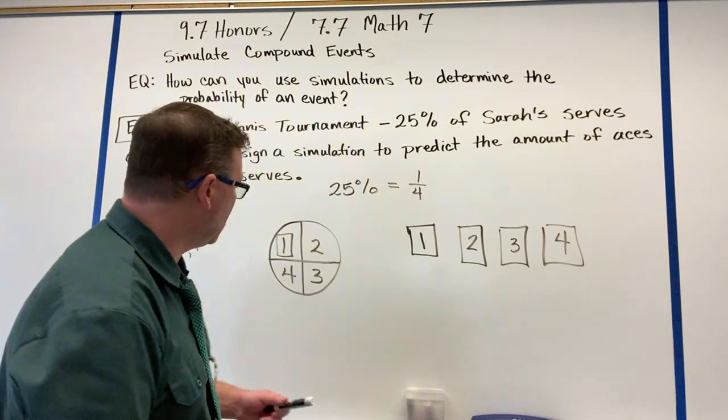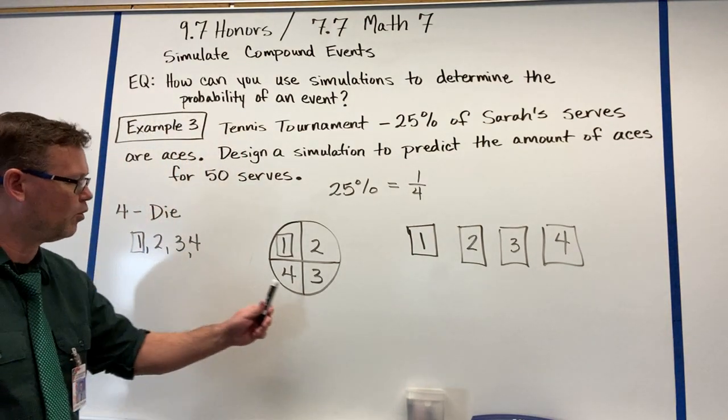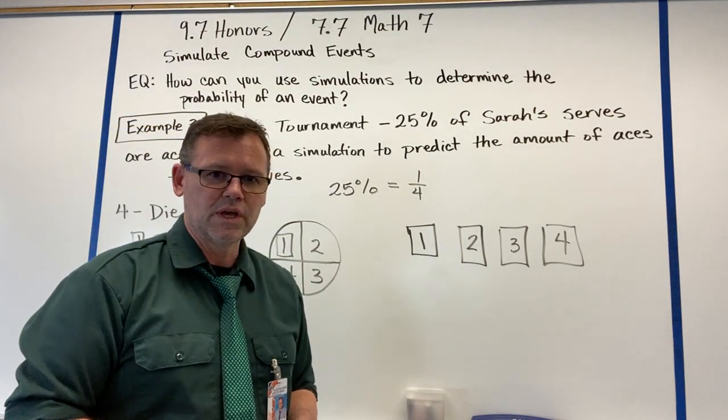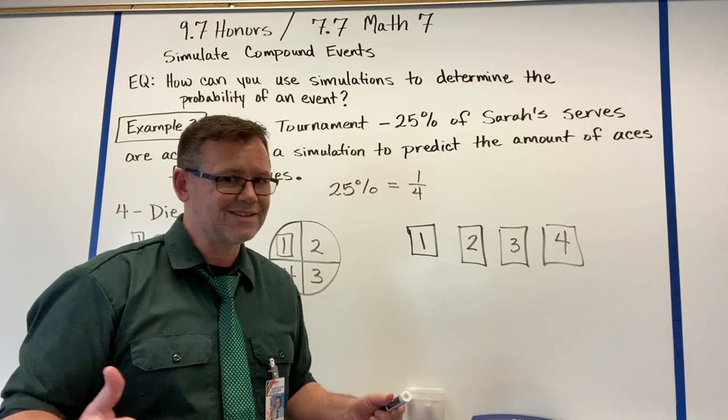So in each case, our sample space is one through four. We have four possible outcomes, we assign one of them, and we do it that way. That's it.